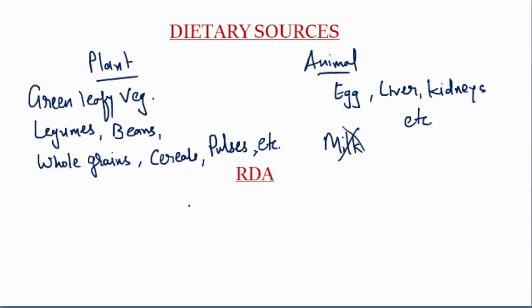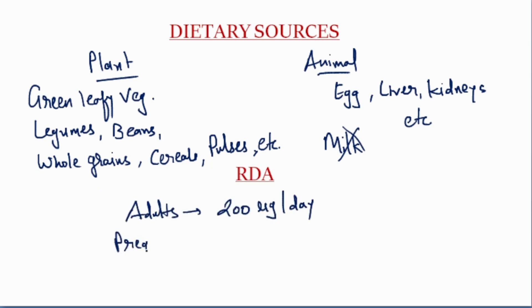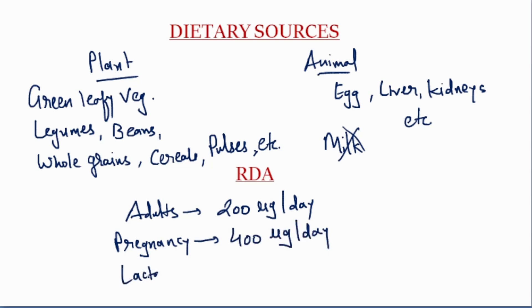The recommended daily allowance for adults is 200 micrograms per day. In pregnancy, the requirement is increased to 400 micrograms per day. During lactation, the requirement is 300 micrograms per day.